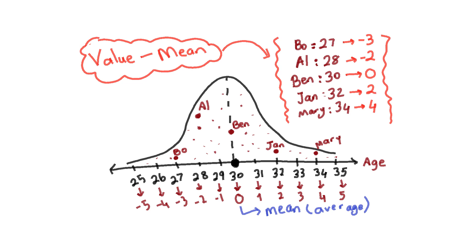So the average is 30. We are transforming the average into 0. And accordingly, Bo's age is 27, 27 minus 30, minus 3. Al's age is 28, 28 minus 30, minus 2. Ben's age is 30, 30 minus 30, 0. Jan's age is 32, 32 minus 30, 2. Mary's age is 34, 34 minus 30, 4.